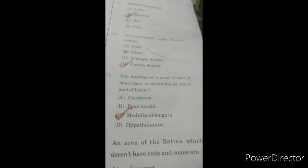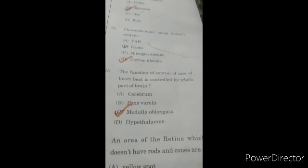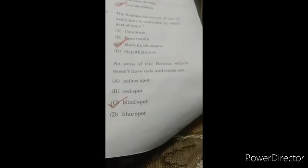The function of control of rate of heartbeat is controlled by which part of the brain? C option, blind spot, is the right answer.